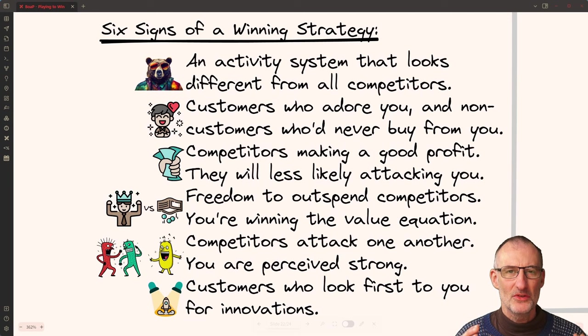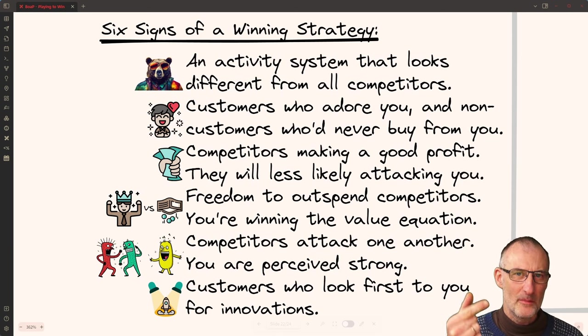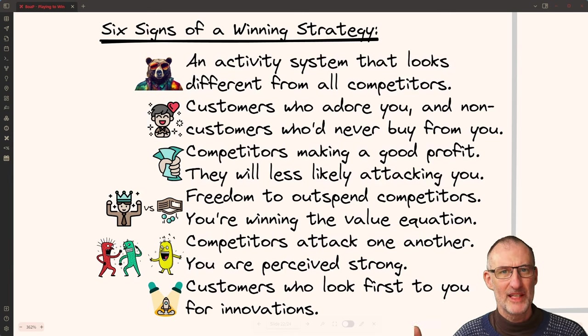And finally, you have a good strategy. You know you have a good strategy when you see that your activity system looks different from your competitors. It's unique. When you have customers who love you, who adore you, but you also have non-customers who just simply don't understand why would anyone buy from you. There you have competitors who actually make a good profit because A, they're less likely to attack you. B, it seems that you made some good strategic choices which actually left some niches open for others to play in. When you have freedom to outspend your competitors on resources because this means that your value equation is working well.